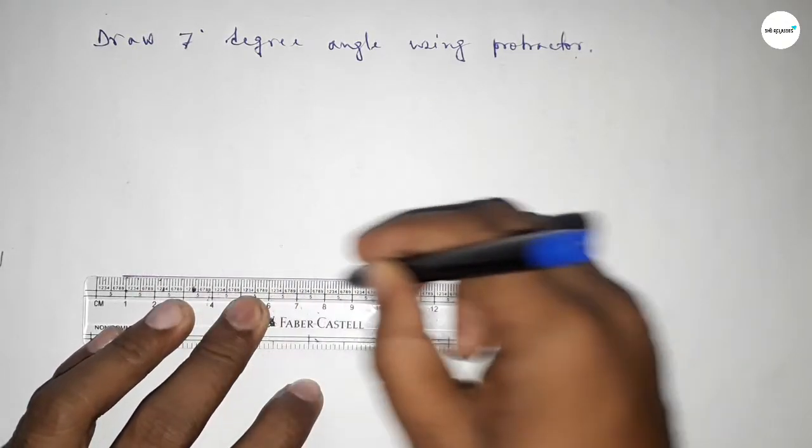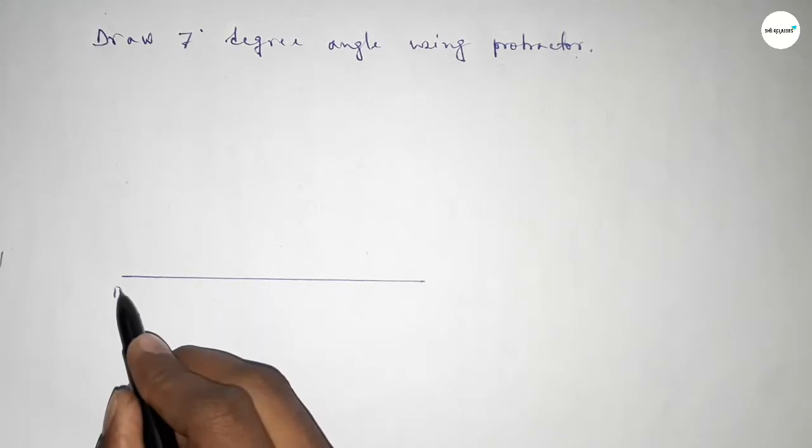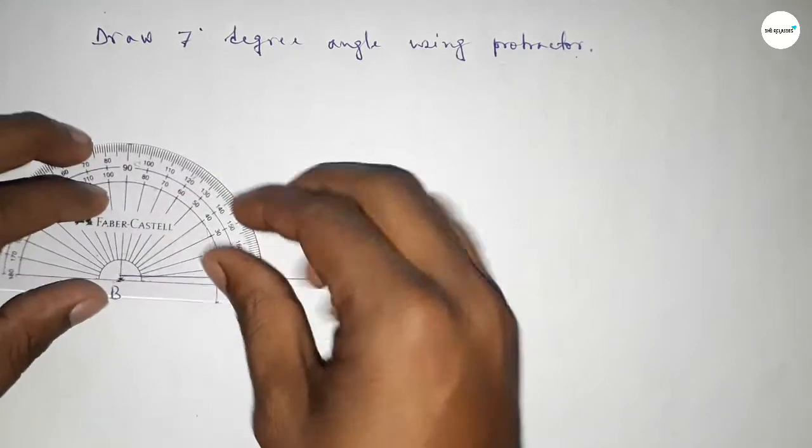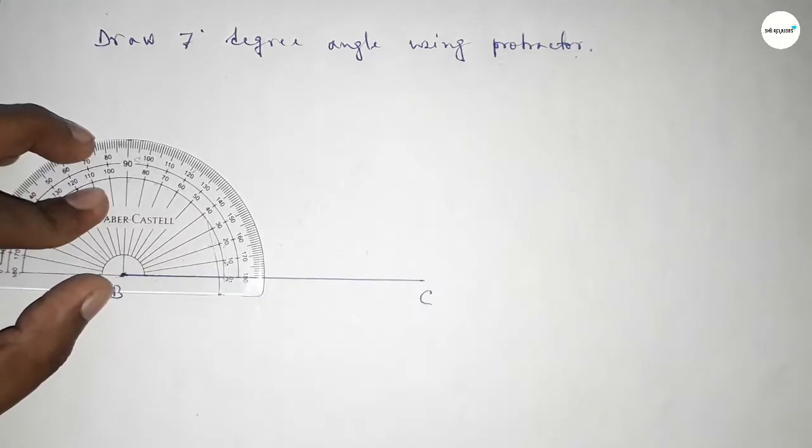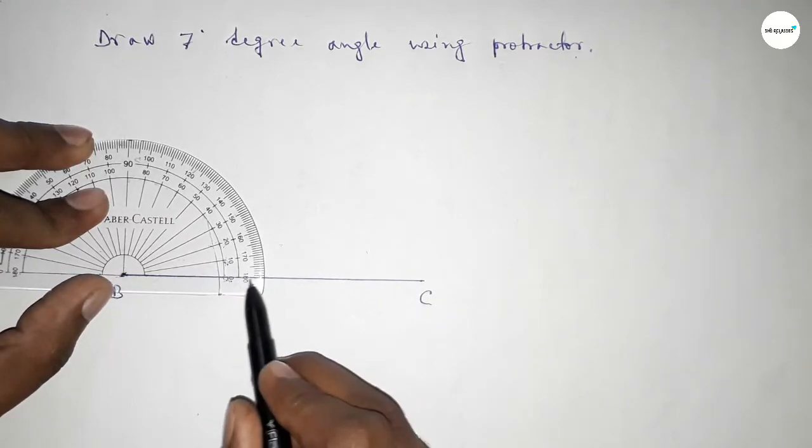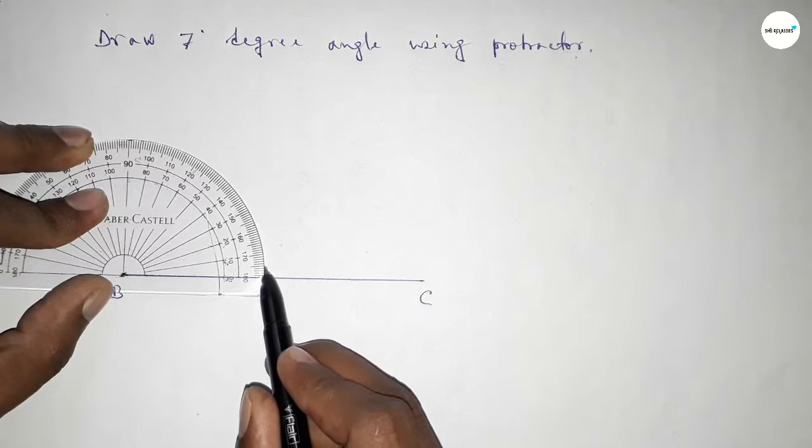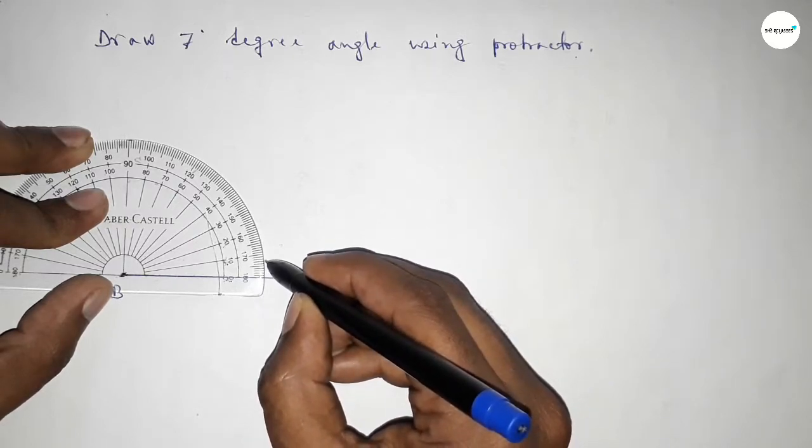Taking here point B and here C. Now put the protractor on point B and count seven degrees. So this is starting: zero, one, two, three, four, five, six, seven. So this is seven degrees.